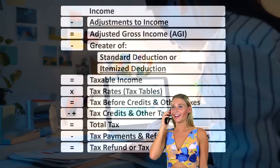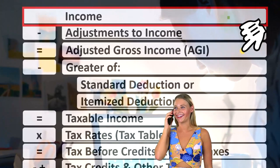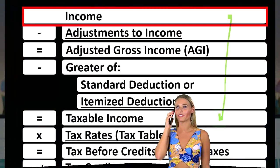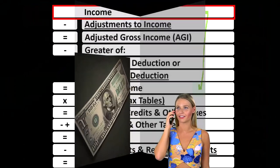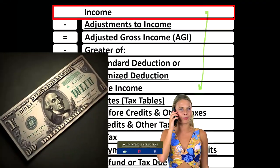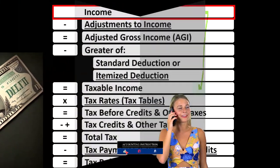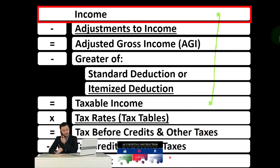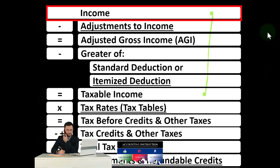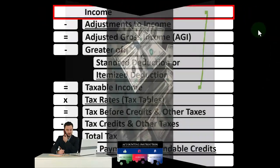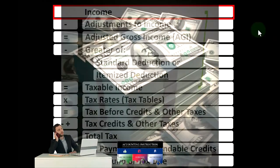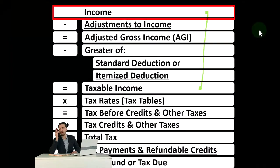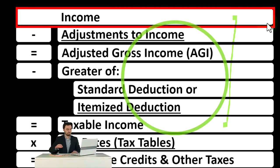Looking at the income tax formula, we're focused on line one income. Remember, the first half of the income tax formula is in essence an income statement — although it's just the outline, the scaffolding — with other forms and schedules flowing into it, including Schedule C for the business income, which is its own income statement, having income minus expenses or business deductions, with the net income then flowing into line one of our income tax formula.